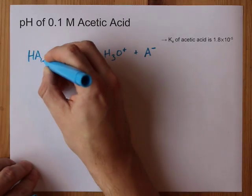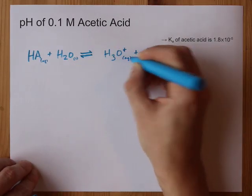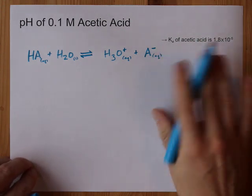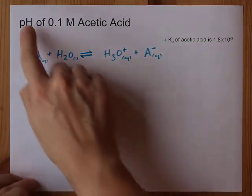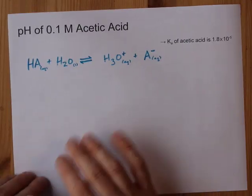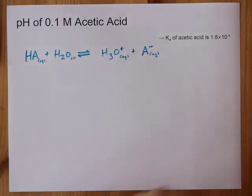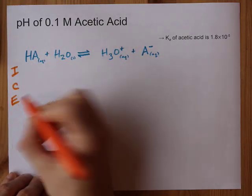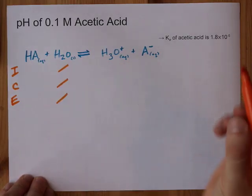This goes forward and can go backwards, so I use an equilibrium arrow as well. This is the aqueous acid, this is liquid water, this is H3O+ dissolved in water, and the acetate ion that's left over is also dissolved in water, so they all get 'aq' labels. If you're asked to calculate the pH, you either have a shortcut formula or you have to do an ICE table. Let's do the ICE table — initial, change, and equilibrium concentrations. Water doesn't matter because it's a liquid.